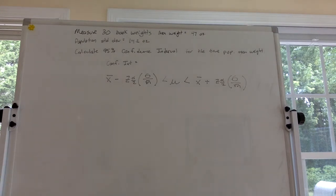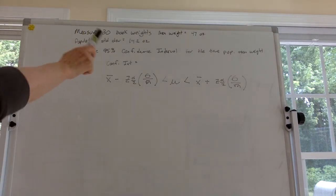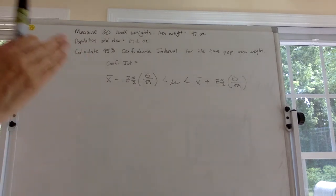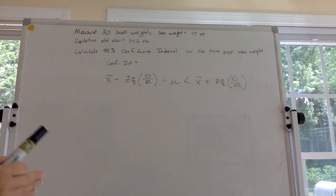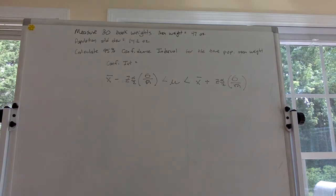So we want a confidence interval for the true population mean weight. We want an interval that's going to show where we think our mean weight is going to fall for these books that we are measuring the weights of.